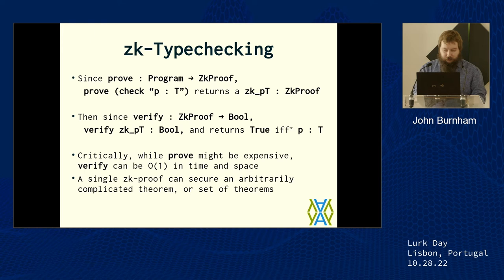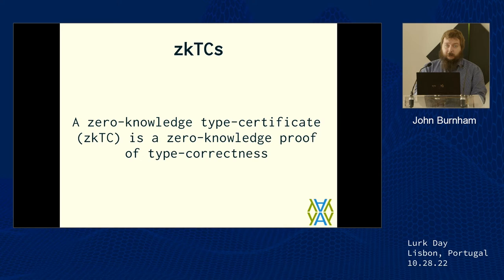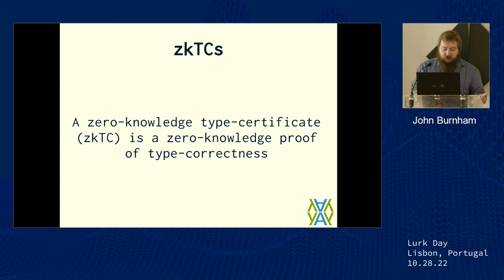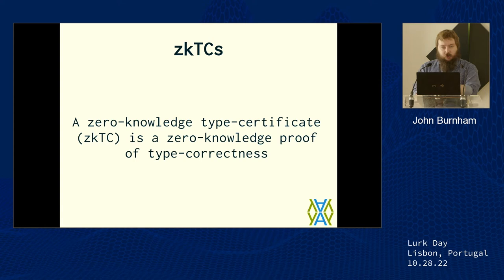That's what a ZKTC is — a zero-knowledge type certificate. It's like a digital certificate that says: this library, this program has passed this type checker. To do that you need to content-address the type checker and content-address the input — there's a lot of detail that goes into making this work. The intuition is that just like you can get the result of a type checker by running it locally on your machine, this lets you securely transport that result to anyone else without requiring them to perform the same operation or install the type checker.